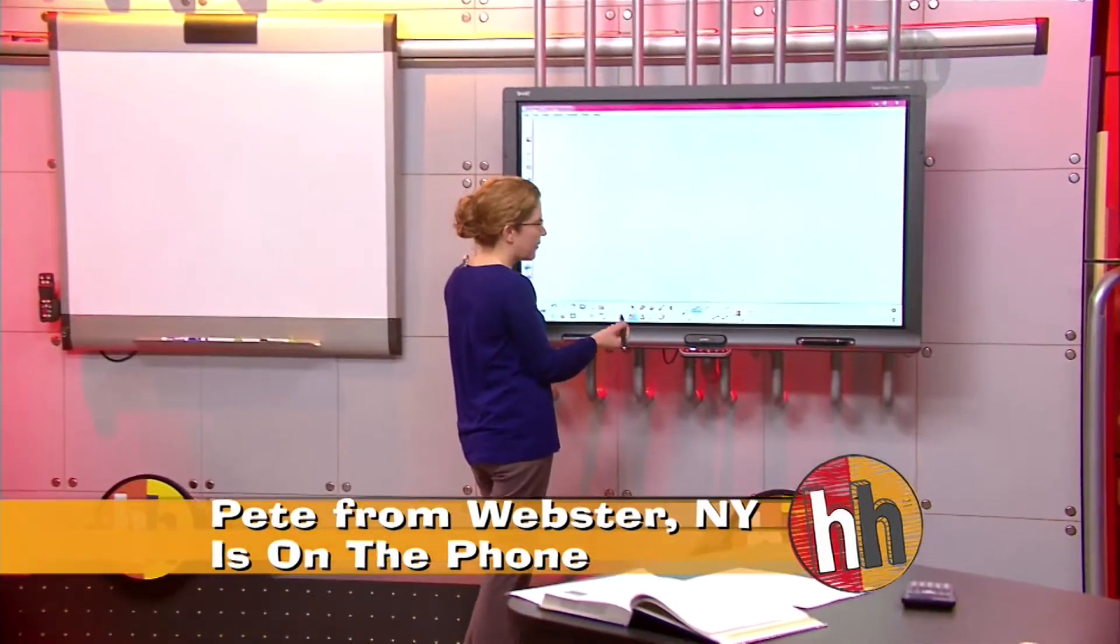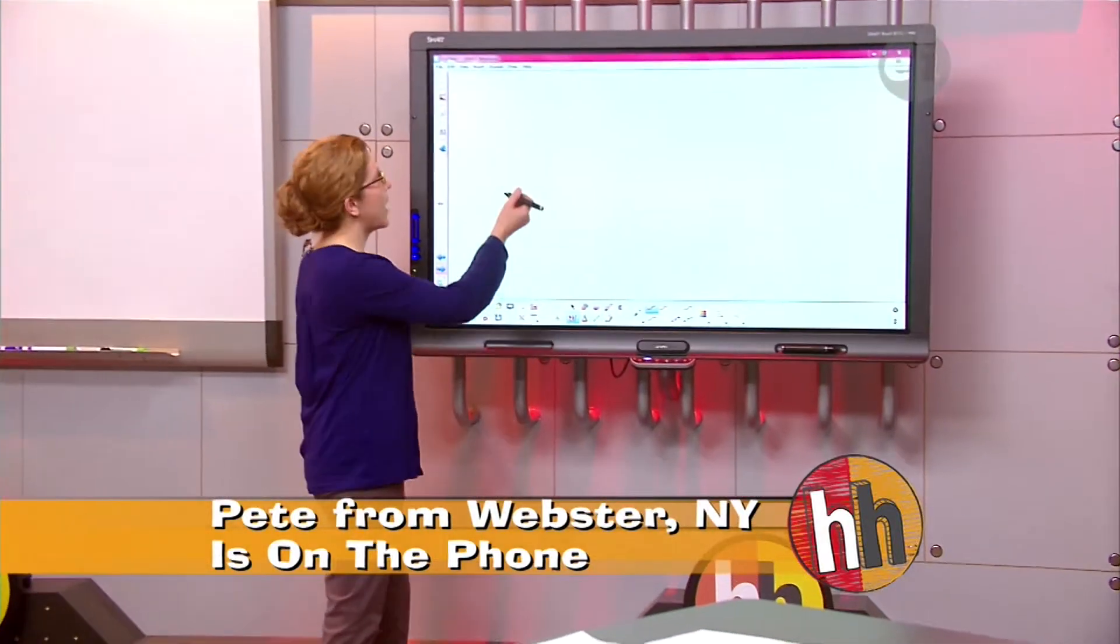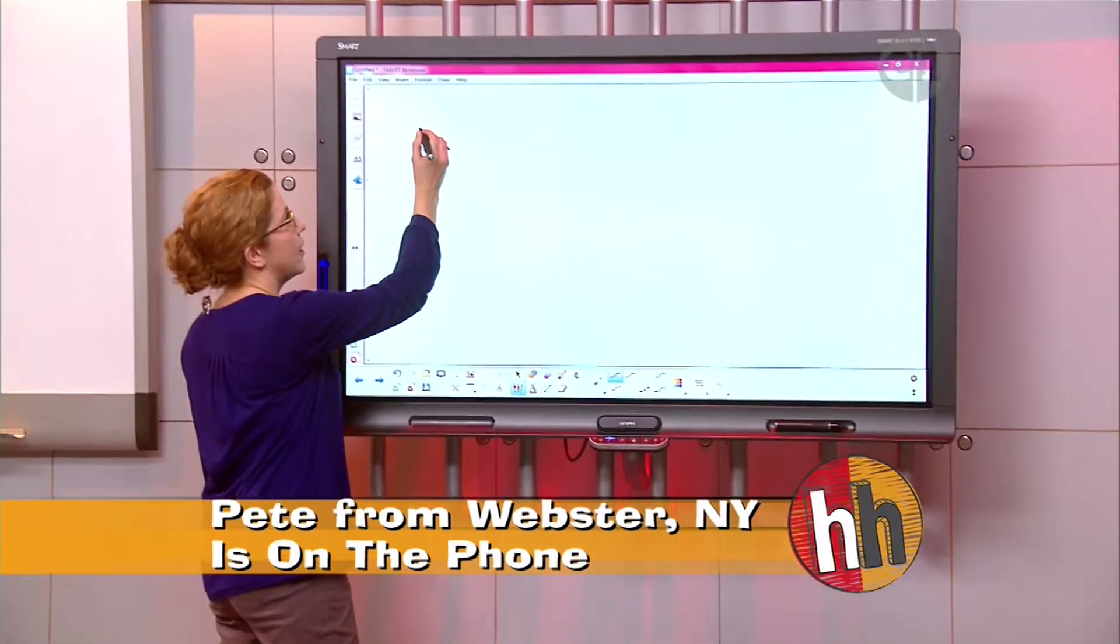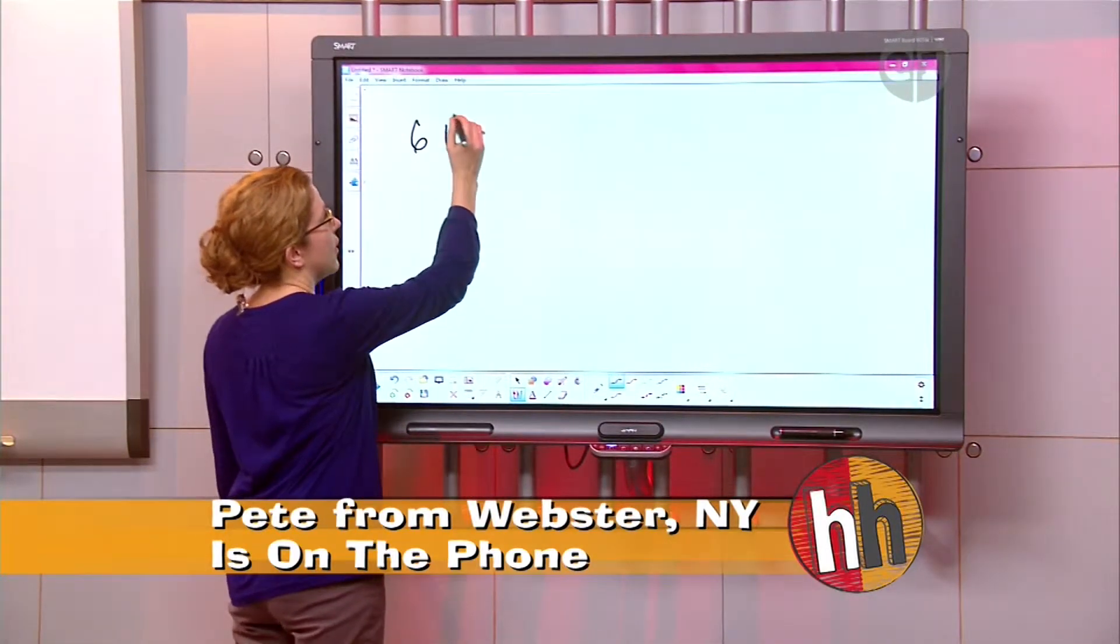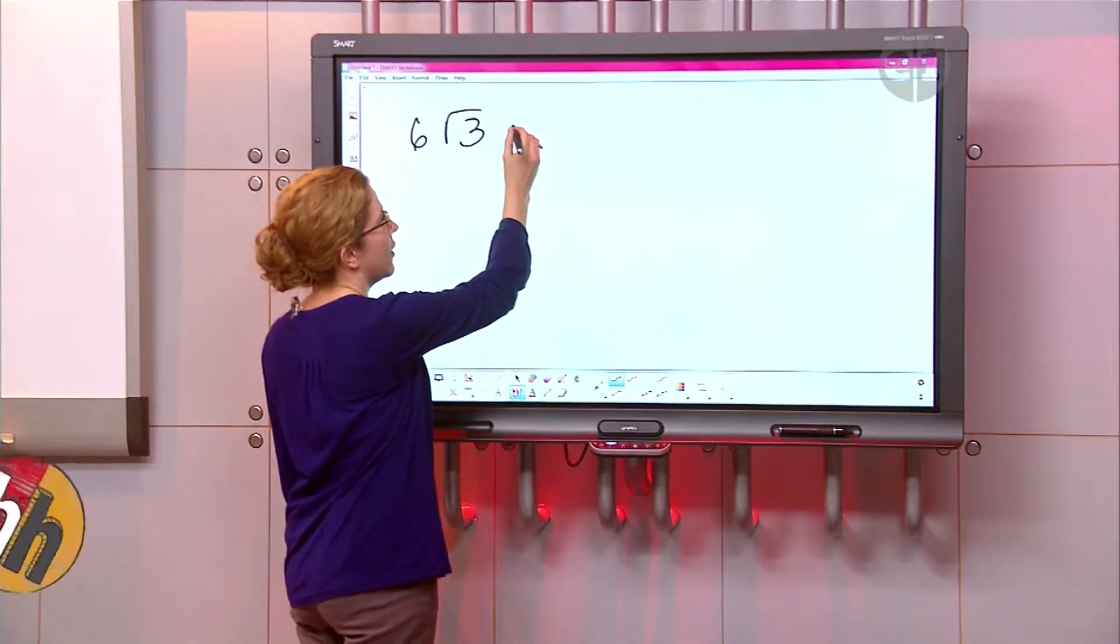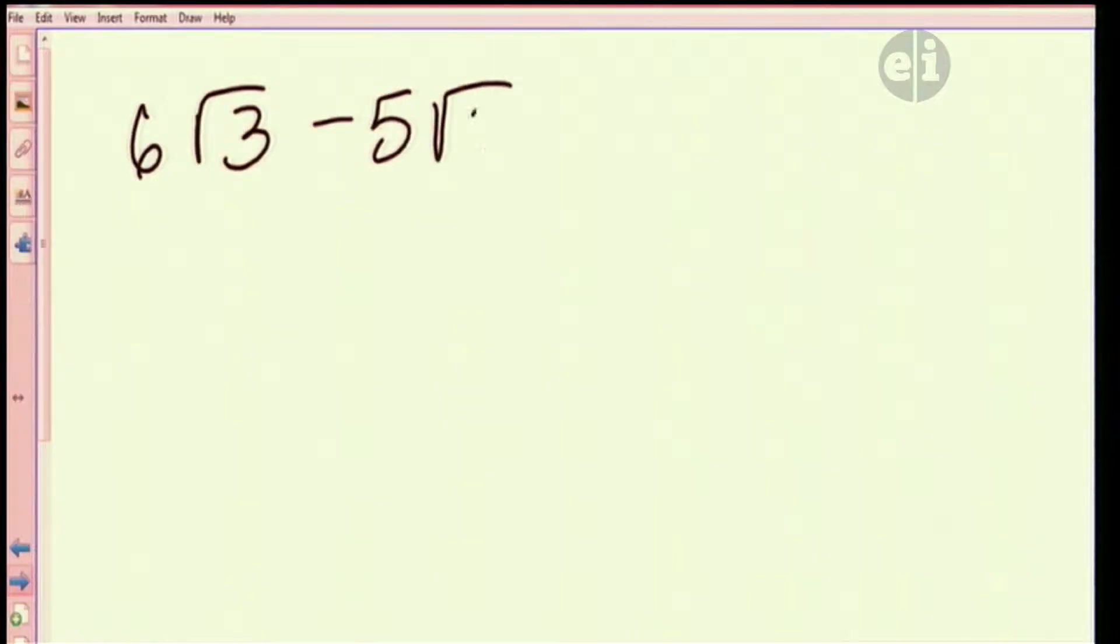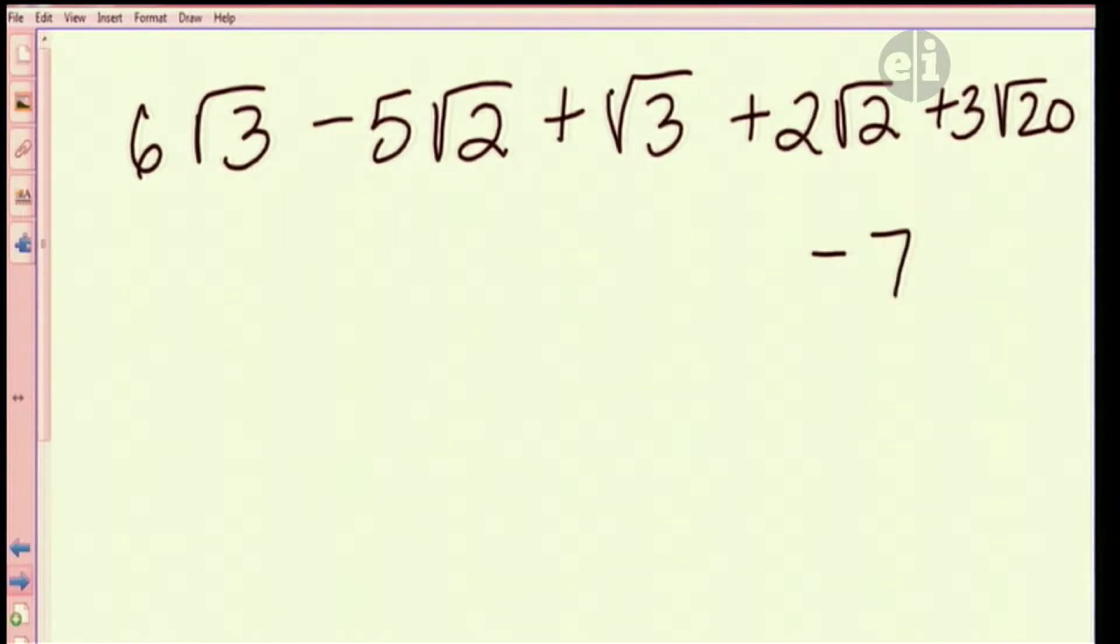It's about adding and subtracting radicals. Oh, great. Okay. Go ahead with your question. Okay. It's six radical three minus five radical two. Okay. Plus radical three. Plus radical three. All righty. Plus two radical two plus three radical twenty. Wow. Okay. Minus seven radical five. Minus seven radical five.